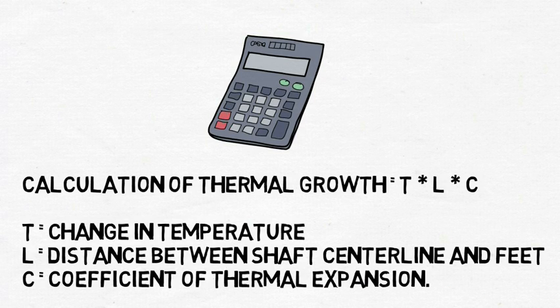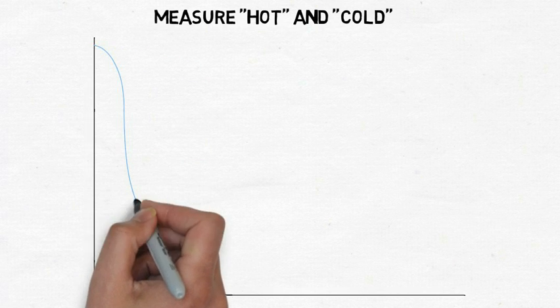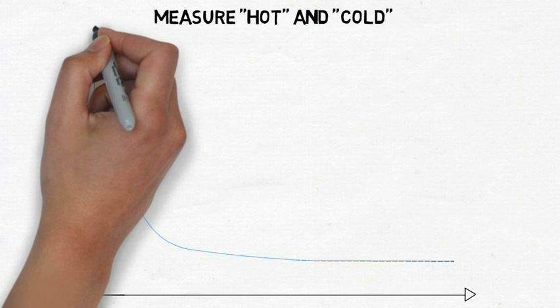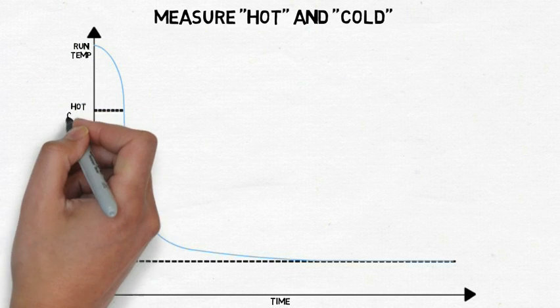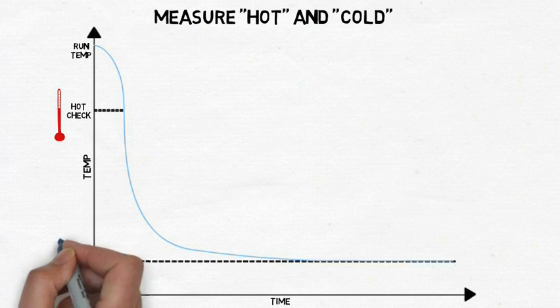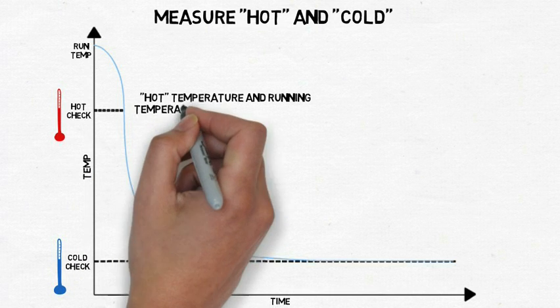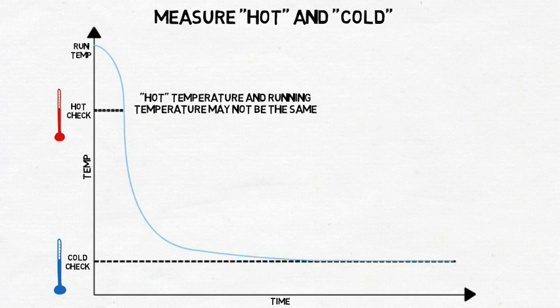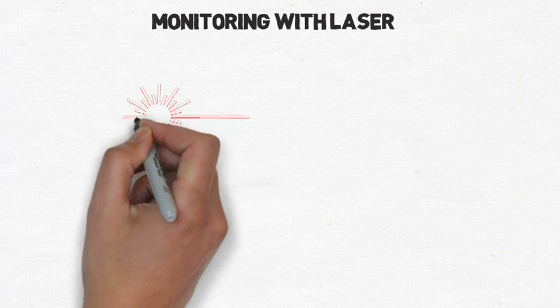To measure thermal growth of a machine train, it is common to do a hot check and a cold check of the alignment between machines. However, this only tells half the story since position shifts due to dynamic load are absent, and it takes time after shutdown to set up and measure, so the running and hot temperatures may not be the same. Once the cold check is measured, the difference between hot and cold will roughly determine how much to compensate for thermal growth.